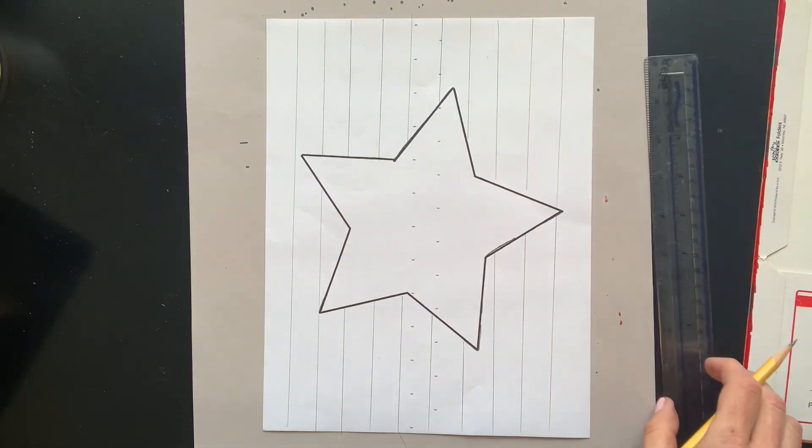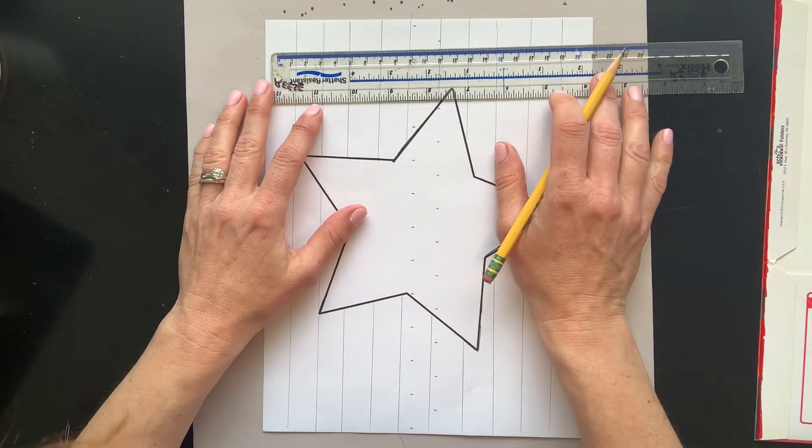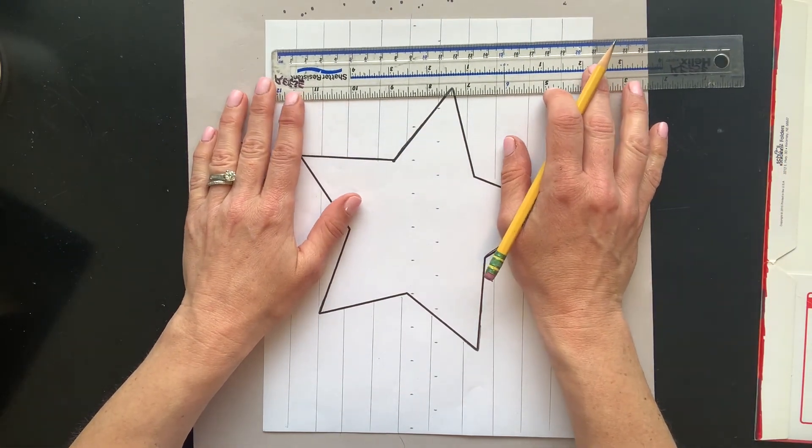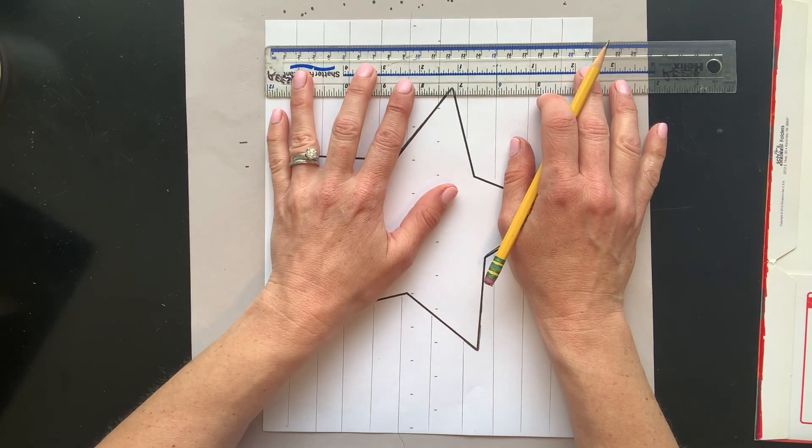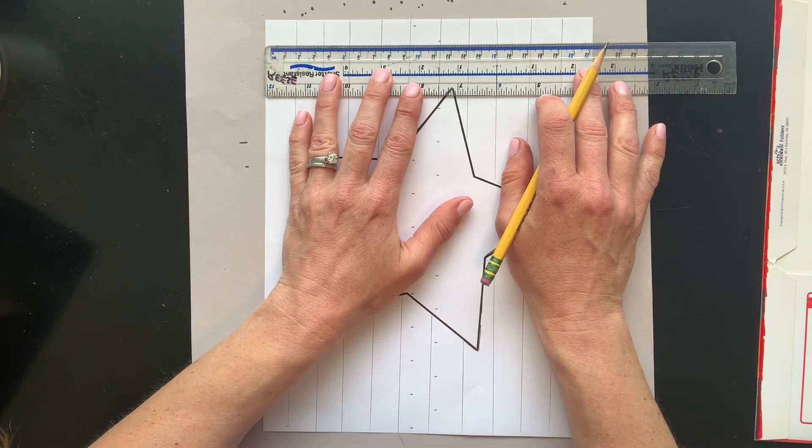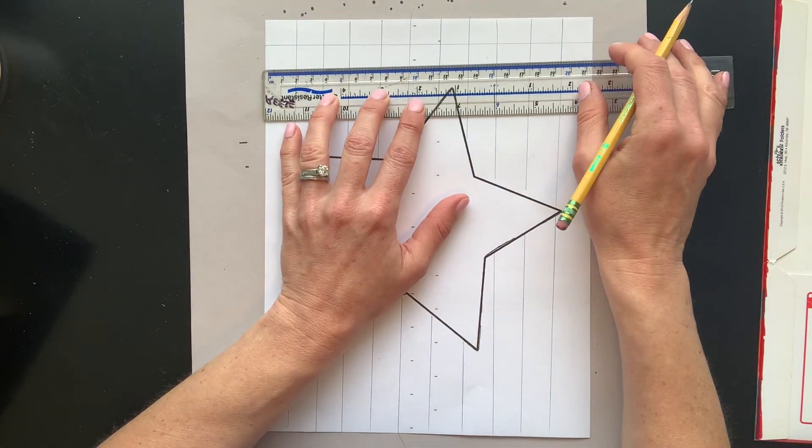Okay, that looks pretty good. Now we're going to do the same thing, but go horizontally across my paper. Line up the ruler with the edge, and just go across.